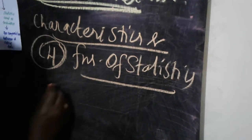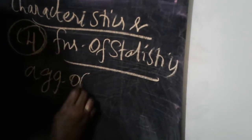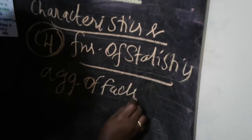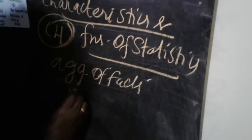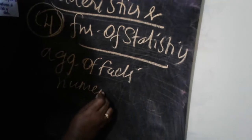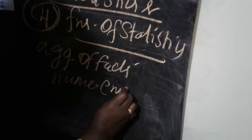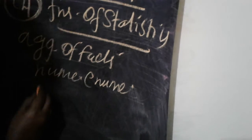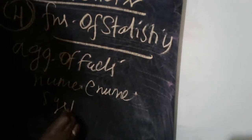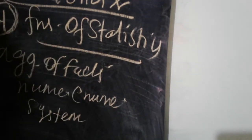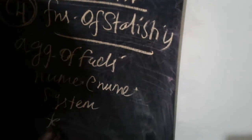First one: aggregate of facts. Second one: numerically enumerated. Third one: systematic in nature. Fourth one: important technique.